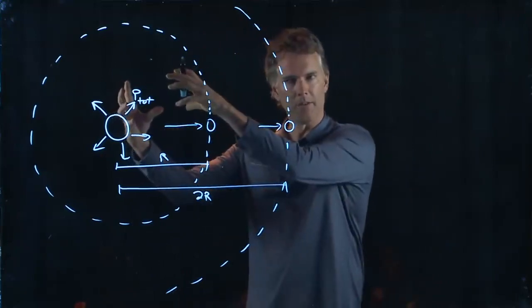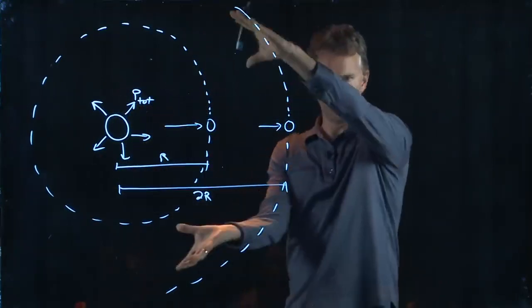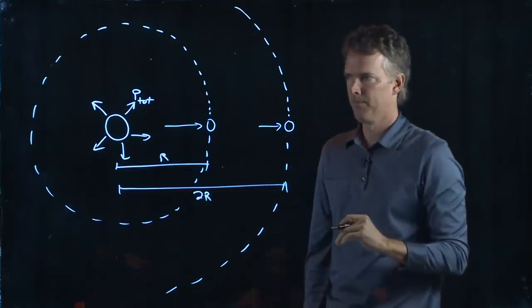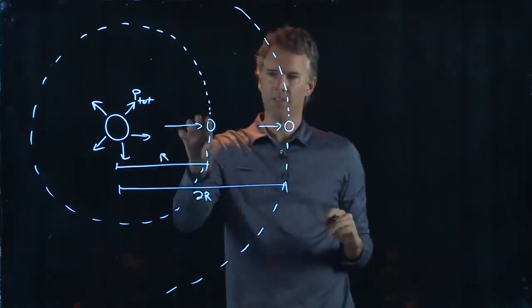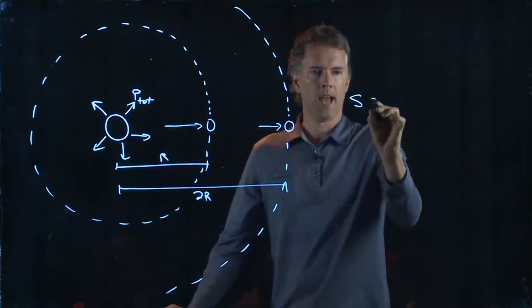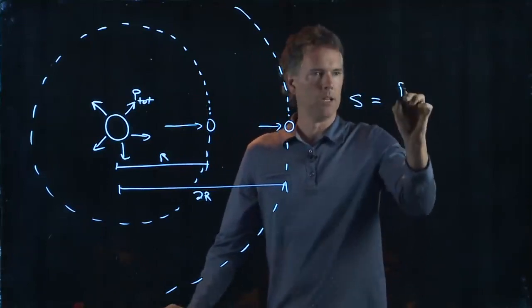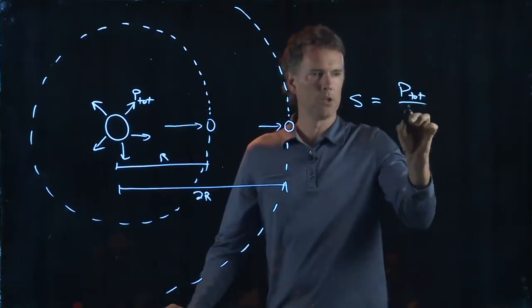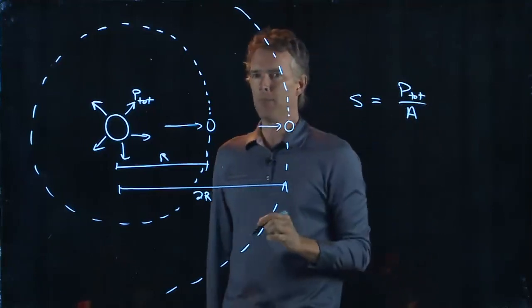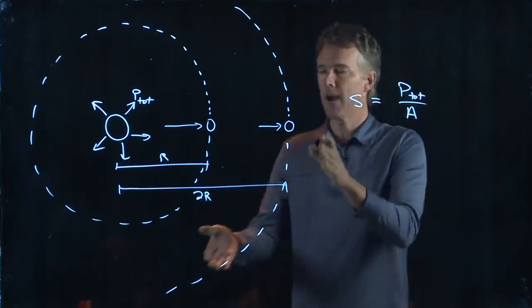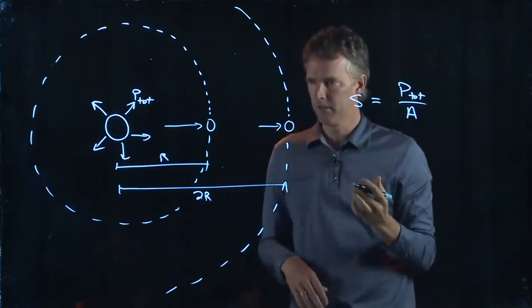All that light that's coming out of the Sun eventually is going to go through this bigger sphere. And so the intensity at any location is just P total divided by area, where it's the area of these spheres.